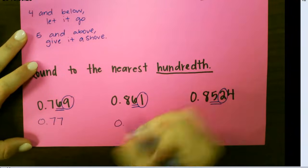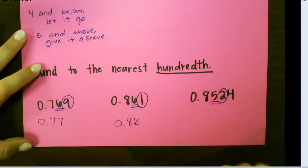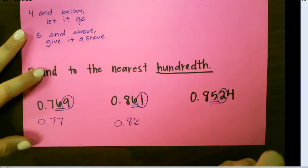For our second one, 1 is below 4, so we're going to leave it alone and round down to 0 and 86 hundredths.